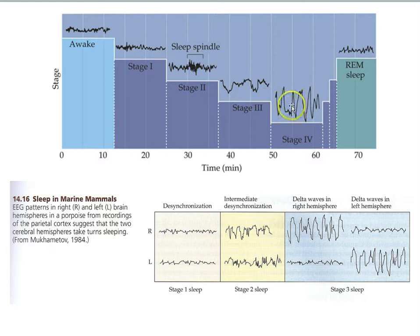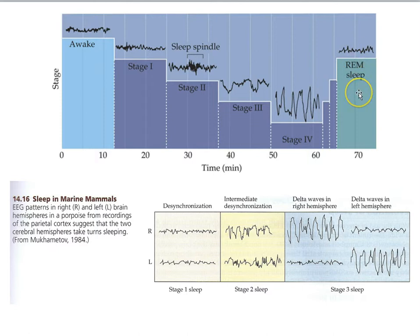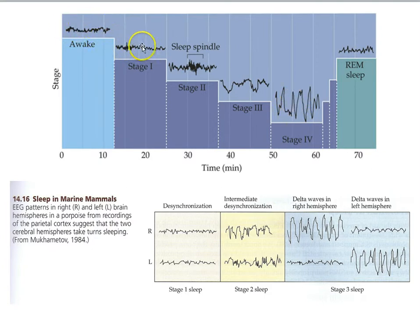This is the EEG pattern of one cycle of sleep, and we would go through this cycle several times during the night. What's interesting is if you recall the stage 4, non-REM sleep — that deep stage of sleep — and take a look at the waking or stage 1 EEG pattern.